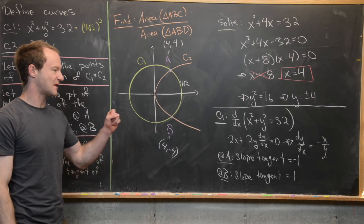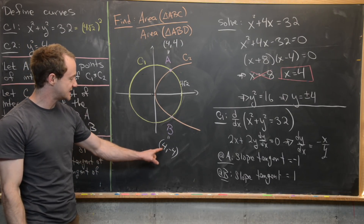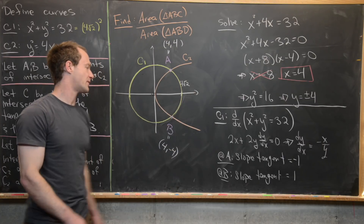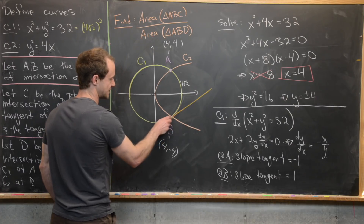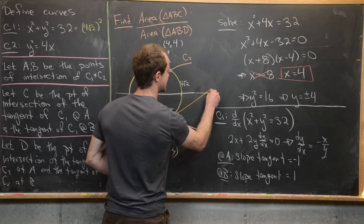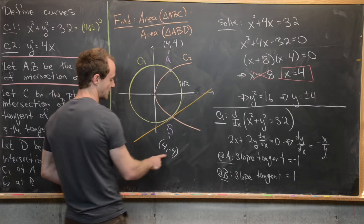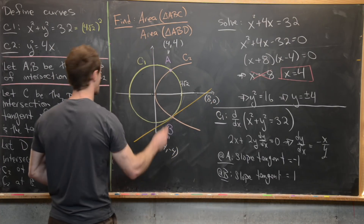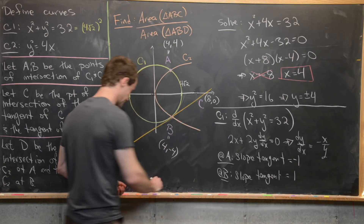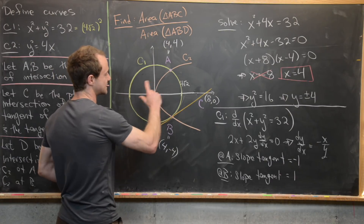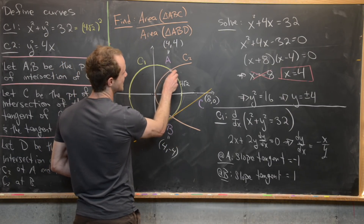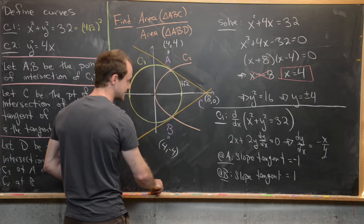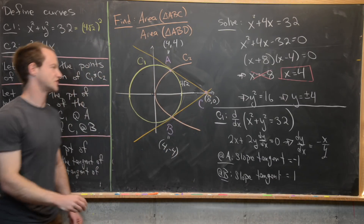We don't need the full equations of the tangent lines — we can use geometric intuition. Starting at B (4, negative 4) with slope 1, going 4 units right brings us up 4 units to the x-axis, landing at (8, 0). By symmetry, the tangent at A also passes through (8, 0). So point C is (8, 0), which is the intersection of both tangent lines to C1.